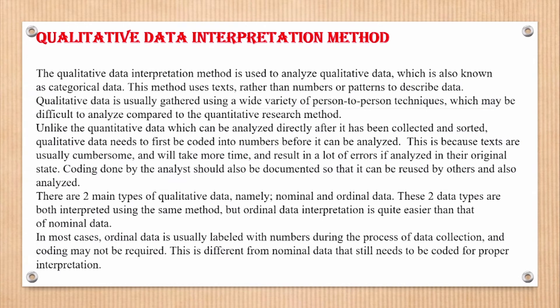The qualitative data interpretation method is used to analyze qualitative data, also known as categorical data. This method uses text rather than numbers or patterns to describe data. Qualitative data is usually gathered using a wide variety of person-to-person techniques, which may be difficult to analyze. Unlike quantitative data, which can be analyzed directly after it has been collected and sorted, qualitative data needs to first be coded into numbers before it can be analyzed, because texts are usually cumbersome and will take more time and result in errors if analyzed in their original state.